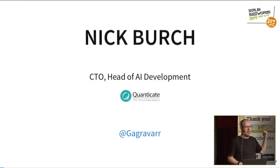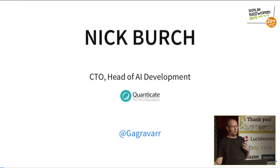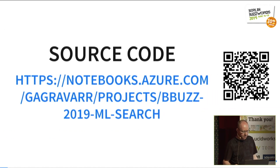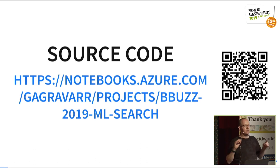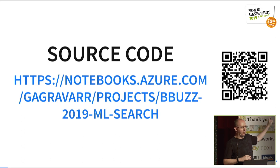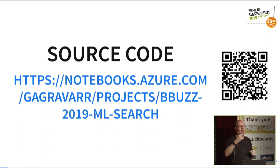My name's Nick Birch, I'm CTO and head of AI development at Quanticate, which is a firm that helps out with clinical trials. We've got a lot of mathematicians and statisticians doing analysis. I'm going to show some source code in the slides during the talk — I've only put in little snippets that are relevant, but I have the whole thing available as an iPython notebook, so you can look at more of the context now if you'd like, and also later clone that notebook and try to customise it for your own needs.